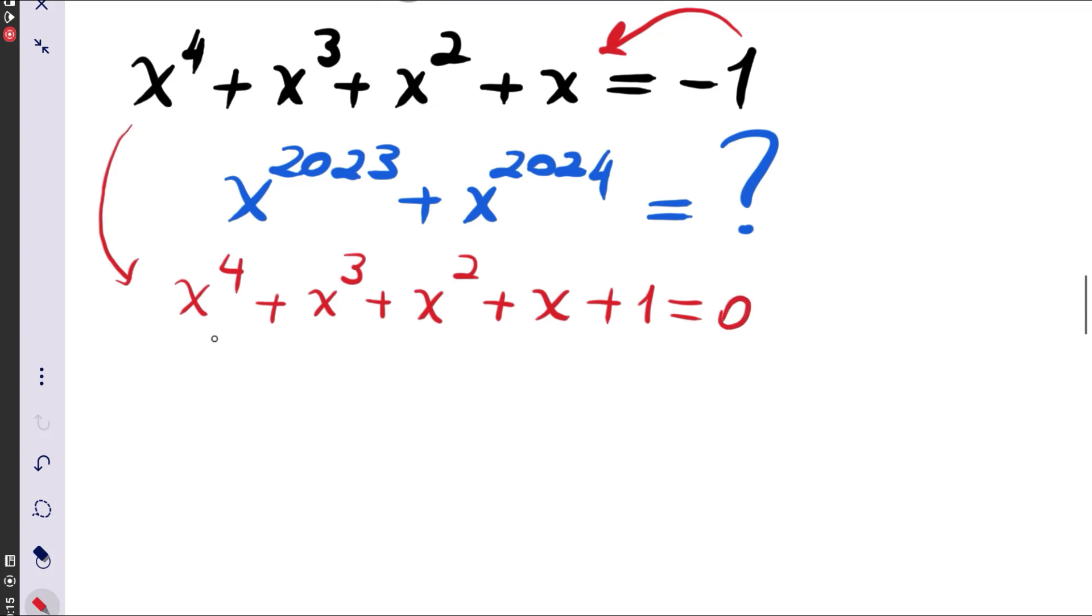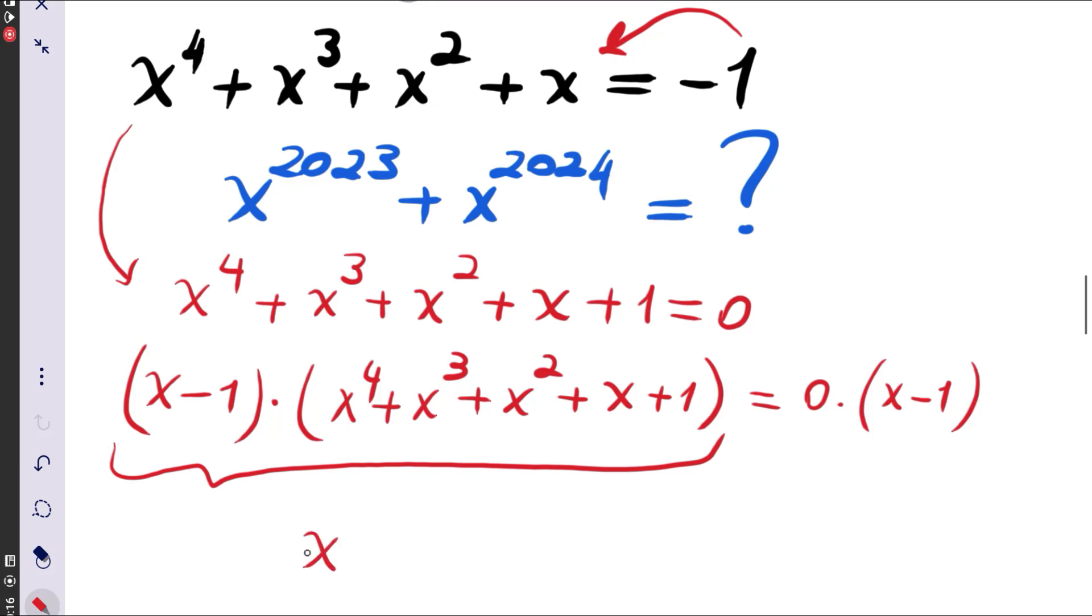Now this fourth degree polynomial should be reorganized by multiplying both sides by x minus 1. x minus 1 times x to the power 4, x cubed, x squared, x, and 1 is equal to 0 times x minus 1, and the left hand side is now just x to the power 5 minus 1, and this is equal to 0. So we have found that x to the power 5 is equal to 1.